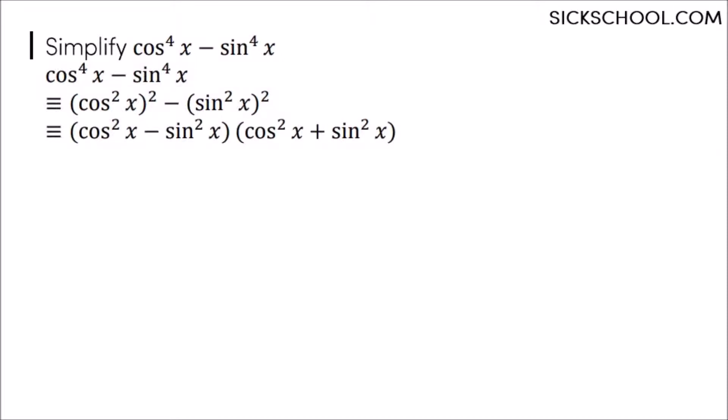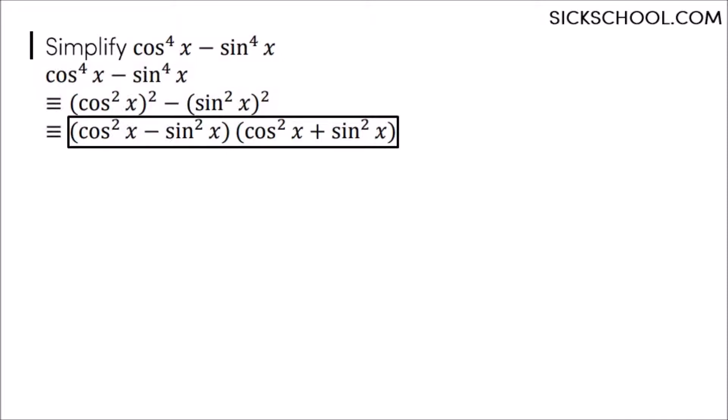Therefore, it factorizes like this. Sine squared plus cos squared always equals 1. So you don't need this in this multiplication.